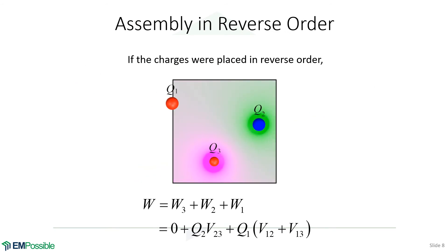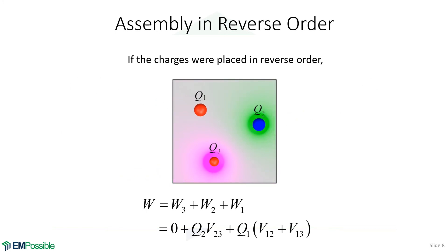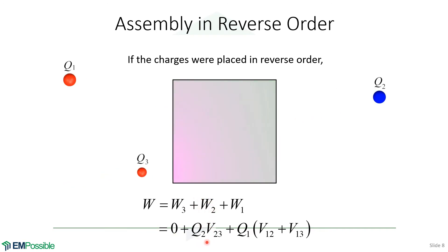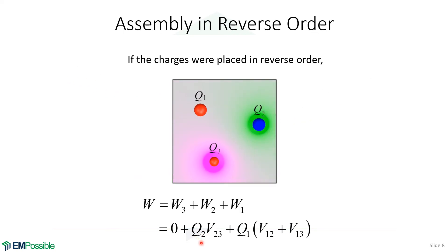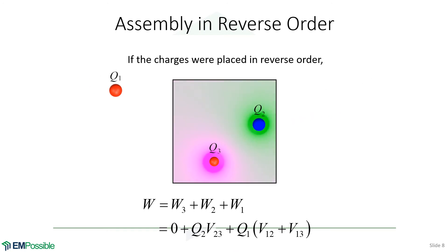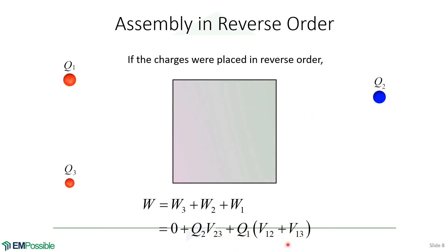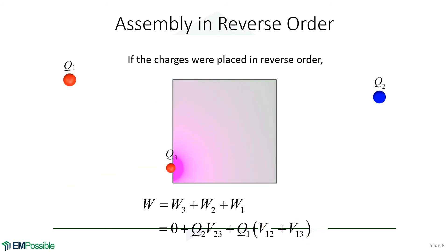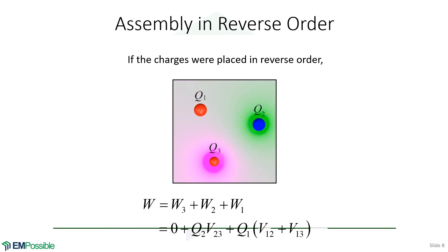What if we did this in reverse order — moving the third charge in place first, the second charge second, and the first charge third? Then moving the third charge takes zero work. Moving the second charge takes Q₂ times the potential at the position of the second charge due to the third charge, V₂₃. And moving the first charge into place gives Q₁ times two potential difference terms, V₁₂ and V₁₃, because Q₂ and Q₃ are already in place. So all we did was reverse the order.